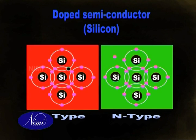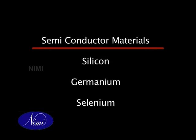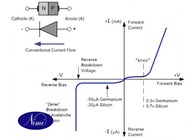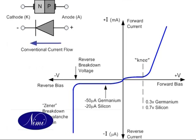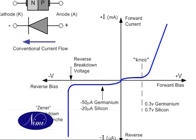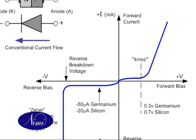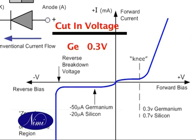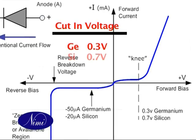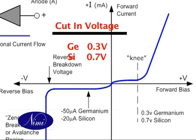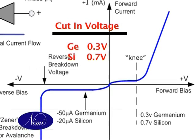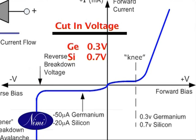The diode is made of doped semiconductor material. This could be silicon, germanium, or selenium. This is important because the cut-in voltage depends upon the material the diode is made of. For example, in germanium diodes, the cut-in voltage is around 0.3 volts, whereas in silicon diodes, the cut-in voltage is around 0.7 volts.